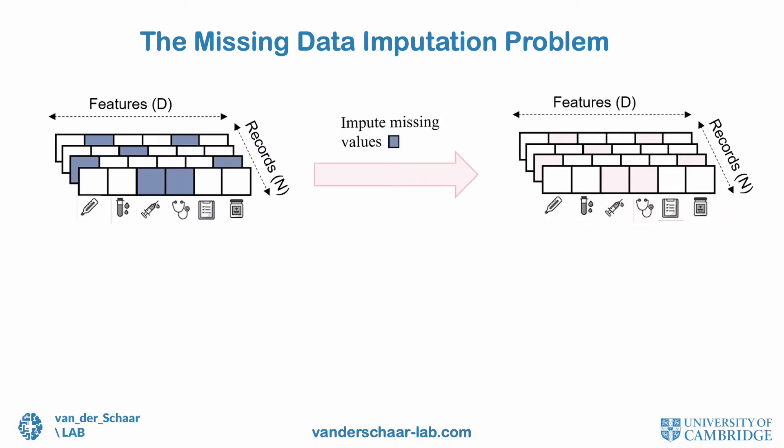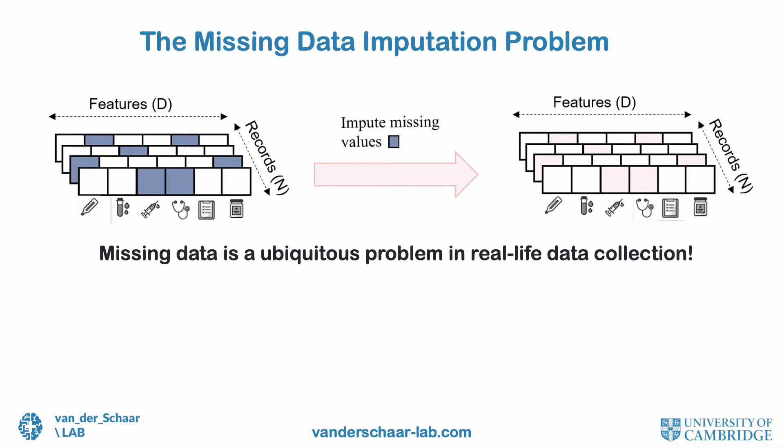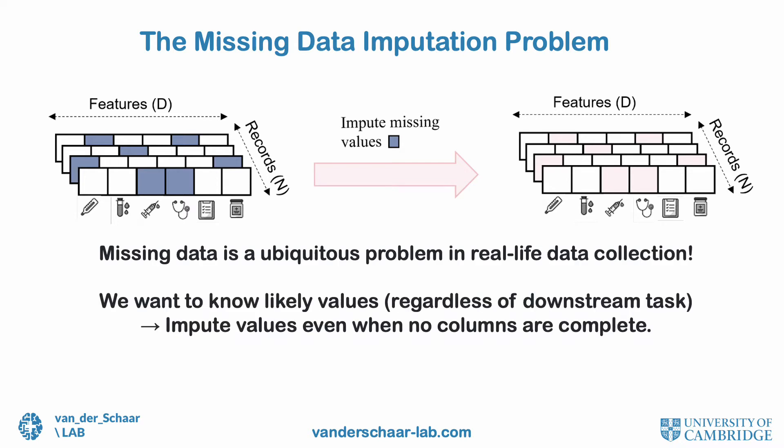Data is one of the most crucial, if not often overlooked, components of machine learning, and missing data is a ubiquitous problem in real-life data collection. In these situations, our goal is to estimate and impute the likely values, such that we can use our datasets even when no features are complete.